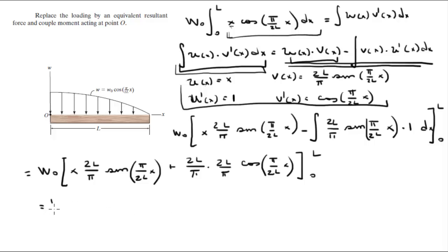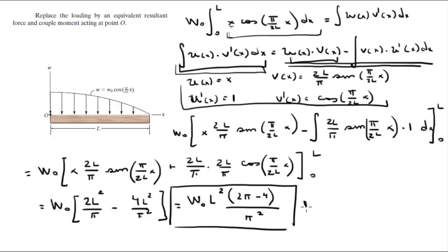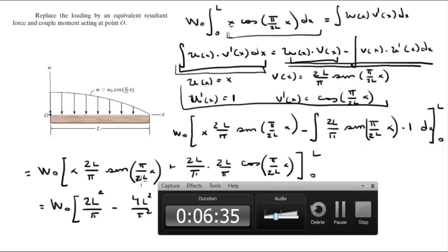And this comes out to be W naught. When you plug in L and 0 for both of them, you're gonna get this equal to W naught times 2L squared over pi minus 4L squared over pi squared, which is equal to W naught L squared times 2 pi minus 4 all over pi squared. So this is the final answer for X-bar, which is the distance from X. Please comment below if you want me to do any problems and I'll be happy to help, thank you.